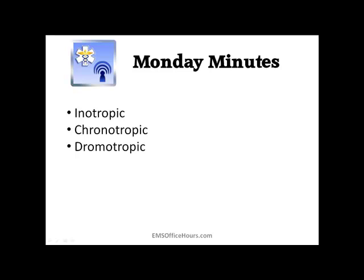Chronotropic pertains to the rate or speed of the heart. A positive chronotropic effect speeds up the heart rate — atropine and epinephrine are examples of drugs with positive chronotropic effects. A negative chronotrope does the opposite and slows down the heart. So chronotropic is about rate, inotropic is about strength.